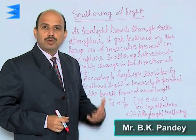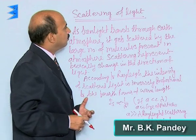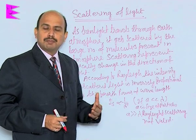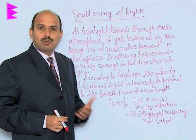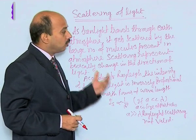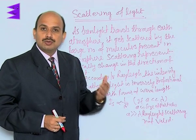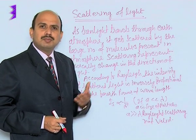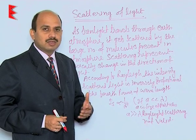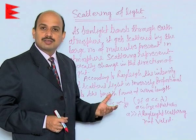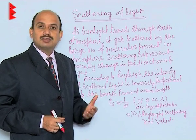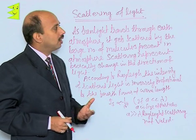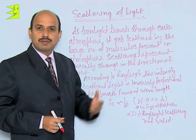After refraction, there is a very important phenomenon called scattering of light. There are many examples like the blue color of the sky, the white color of clouds, and also the red hues in sunrise and sunset. The red color of the sun during sunset and sunrise, and similarly, danger signals are made of red color — all these phenomena are explained by the scattering of light.